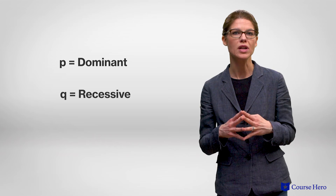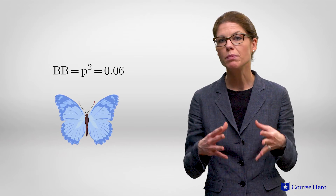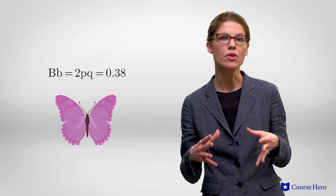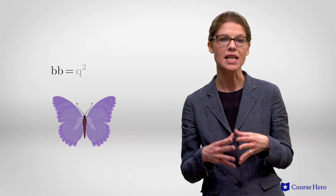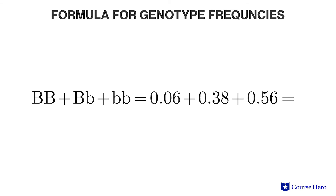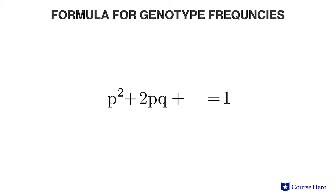Traditionally, Hardy-Weinberg formulas use the letters p and q to represent the dominant and recessive allele frequencies respectively. So we can rewrite the expected genotype frequencies as follows: BB is written as p², which equals 0.06 in this example; Bb is written as 2pq, which equals 0.38; and bb is written as q², which equals 0.56. Because these values are proportions, they must equal 1. This is where the values in the Hardy-Weinberg formula for genotype frequencies come from. The formula is p² + 2pq + q² = 1. Notice that the formula for allele frequencies, p + q = 1, must also always equal 1.